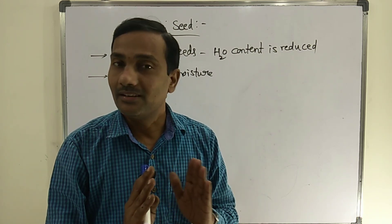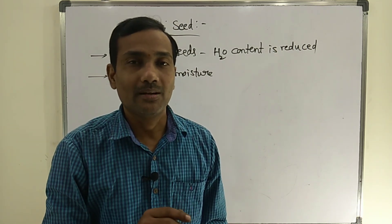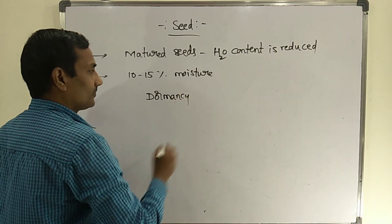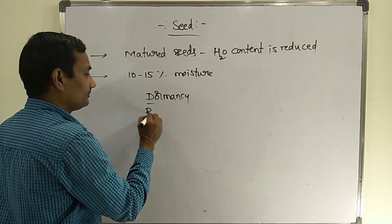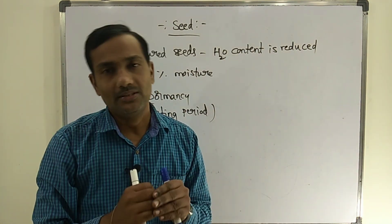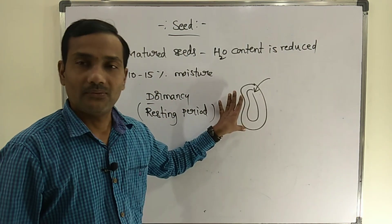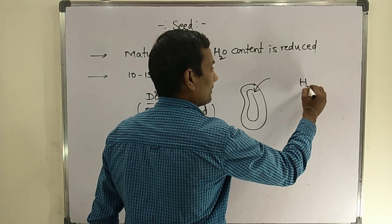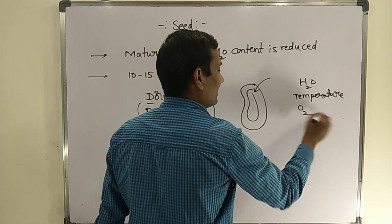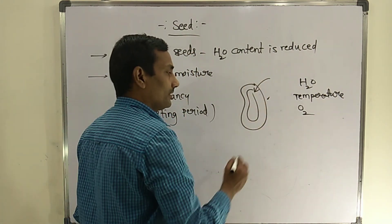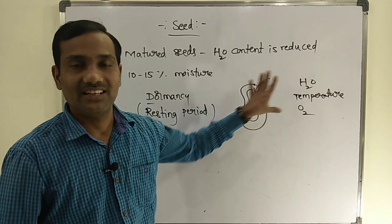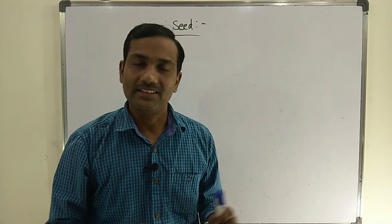During the dormancy period, seeds usually do not germinate — radicle and plumule development is under control. Dormancy is essentially a resting period caused by reduced water levels and slowed metabolic activities. Whenever favorable conditions are available — water, appropriate temperature, and oxygen — the seed germinates and develops the root and shoot.